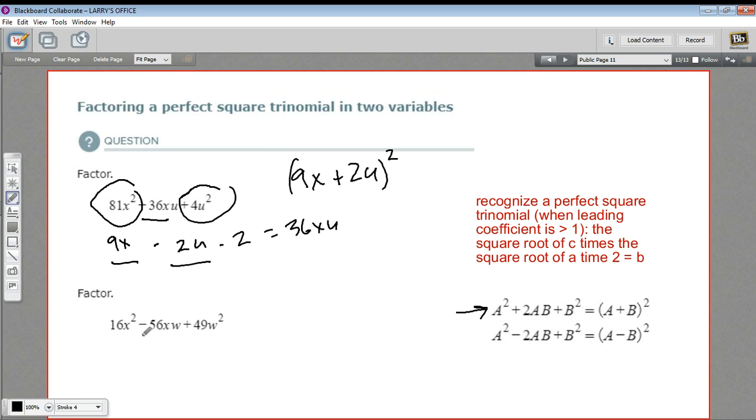If you have a negative sign in the middle, you're just going to put a negative sign up here. But let's test this one and see if we've got a perfect square trinomial. So the square root of the first term would be 4x. The square root of the last term would be 7w.